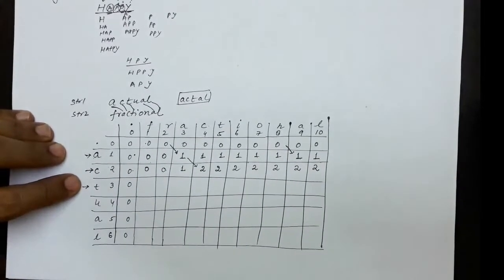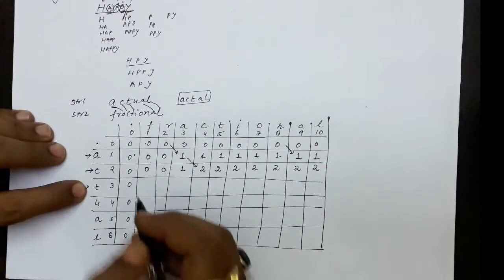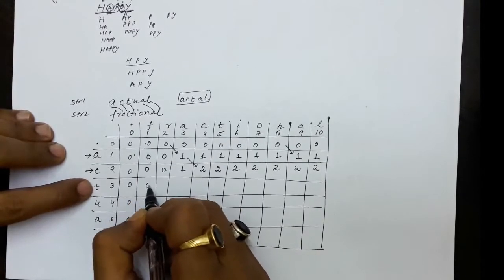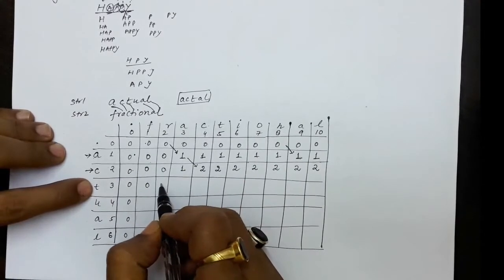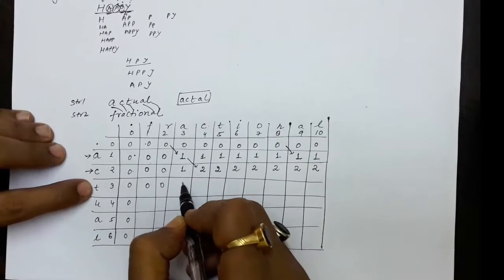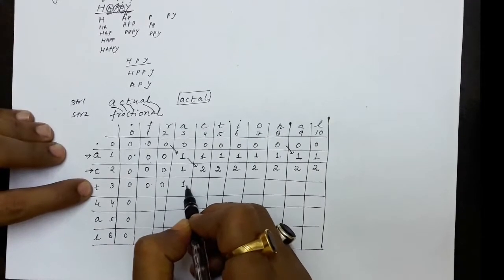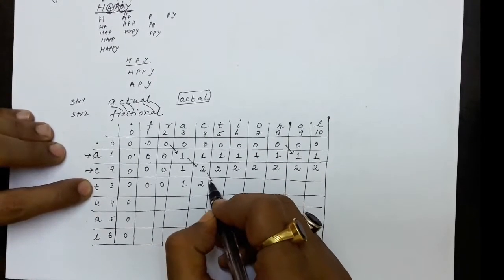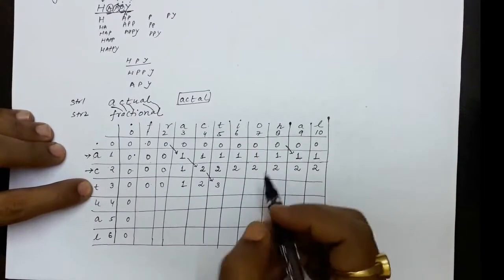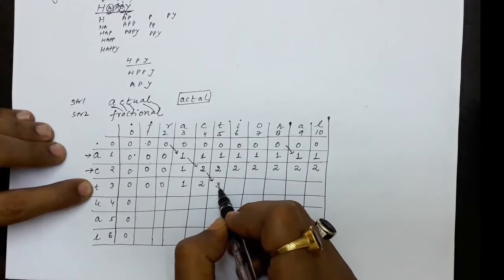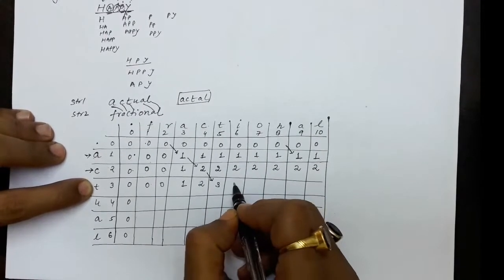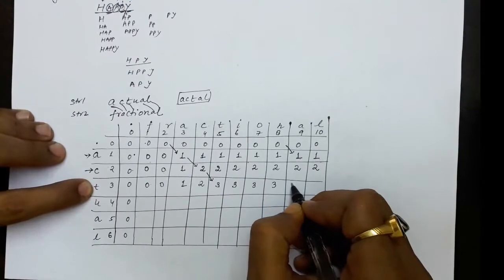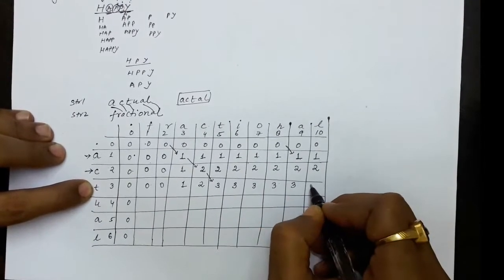Now we are considering a, c, t all in the first string, comparing against the second string character by character. T and f, T and r — no match. T and a — no match but maximum of the neighbors is 1. T and c — no match, maximum is 2. T and t — yes, there is a match, so diagonal value plus 1 gives 3. For T compared against i, o, n, a, l — no match, carry forward the maximum values.